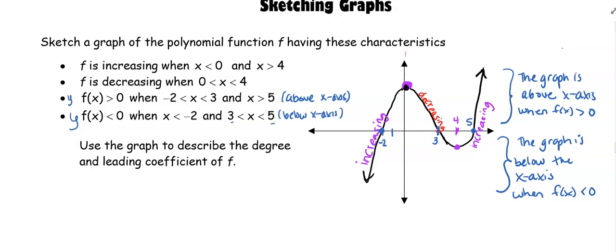So now that we have a sketch of our graph we can use this information to answer the question. Use the graph to describe the degree. In this case we have as x goes to the left, look at our end behavior, f of x goes down. As x goes to the right, f of x is going up.